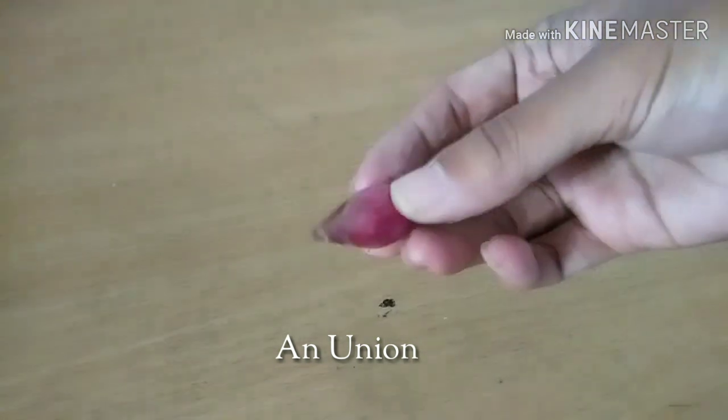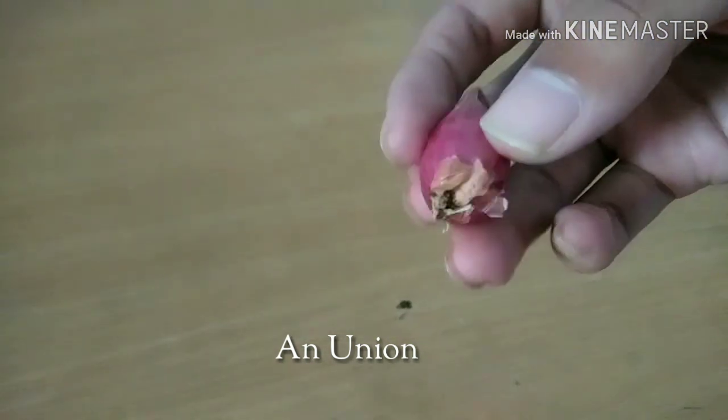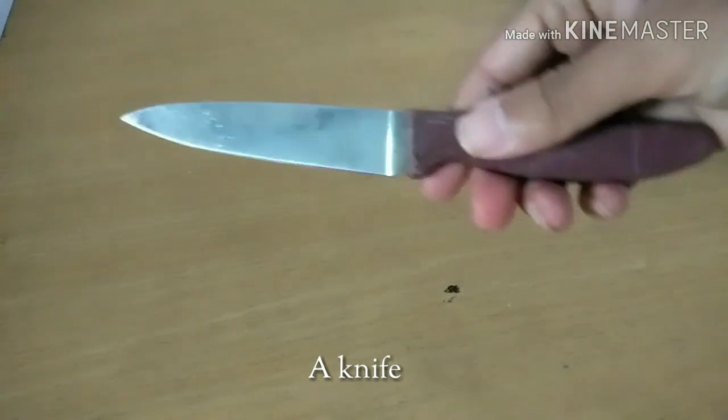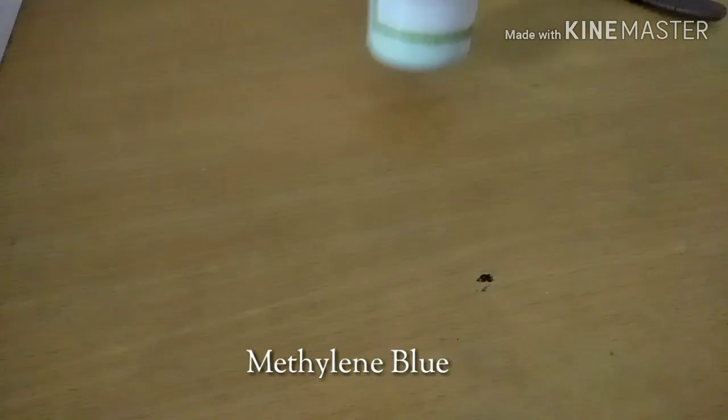An onion, as a sample that we use for observing. Seven, knife, to slice the onion. Eight, methyl blue, used for coloring the object.